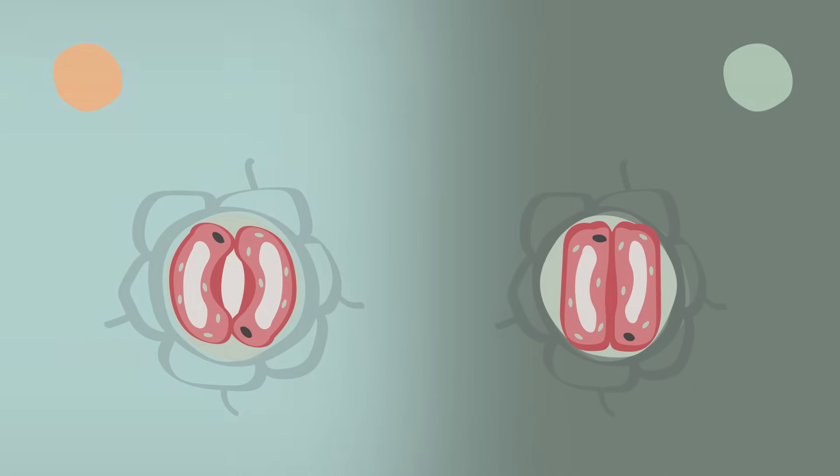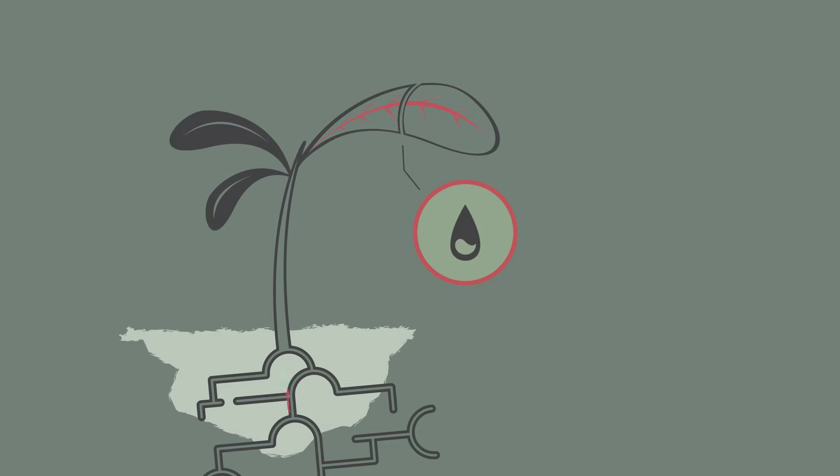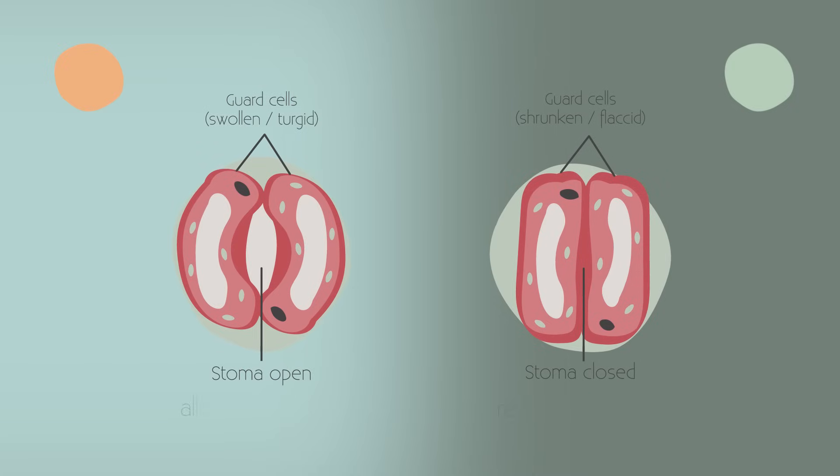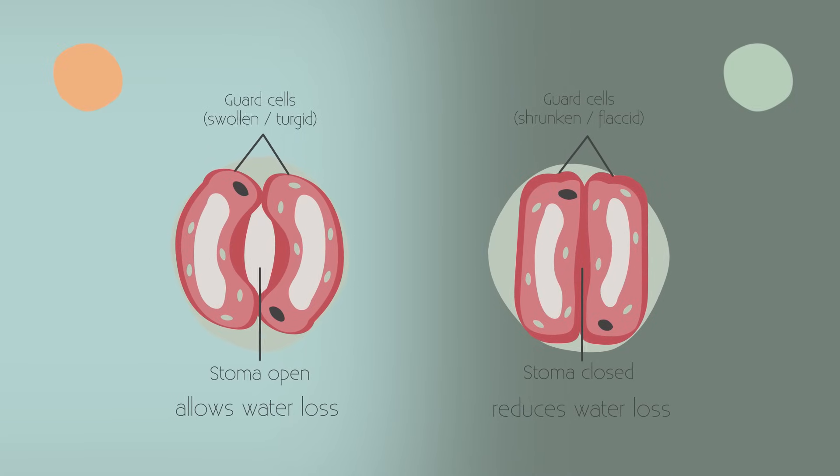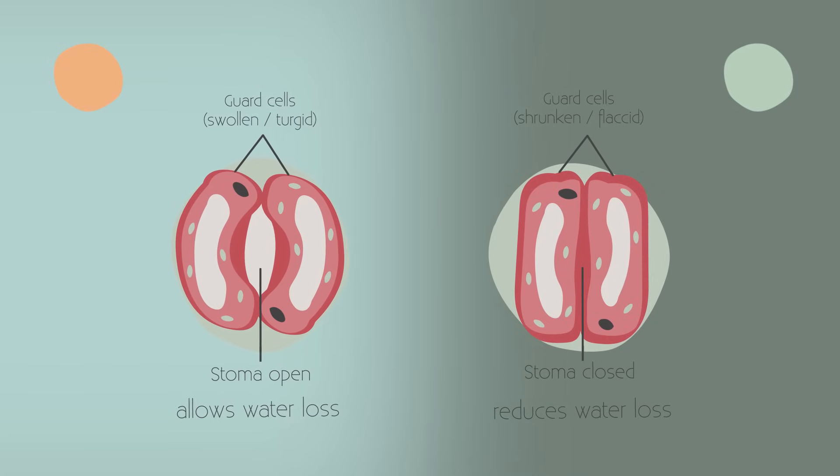So you now know about water movement through the plant, up the xylem and pulled along the transpiration stream by the transpiration pull. And unsurprisingly, the plant has methods to control water loss by closing the stomata, based upon how flaccid or turgid the guard cells are.